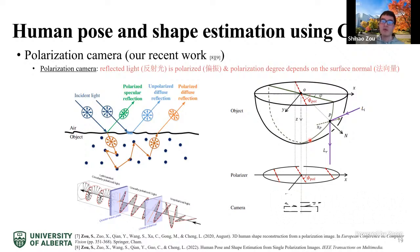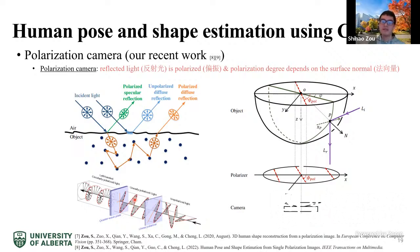By using different degrees of polarizer on top of the camera, we can sample several points on a sine curve. From these sampled points, we can calculate the polarization degree, which is regarded as the surface normal of the object at that point. This is the working mechanism of the polarization camera.